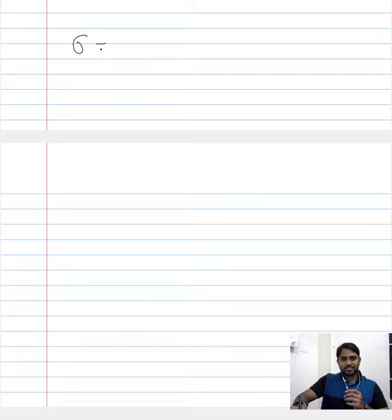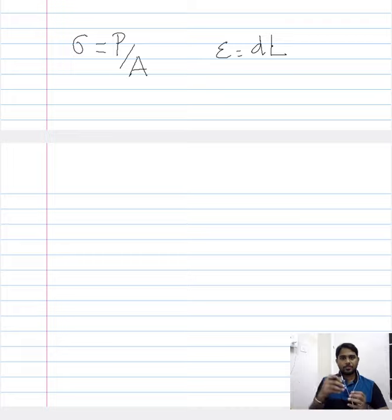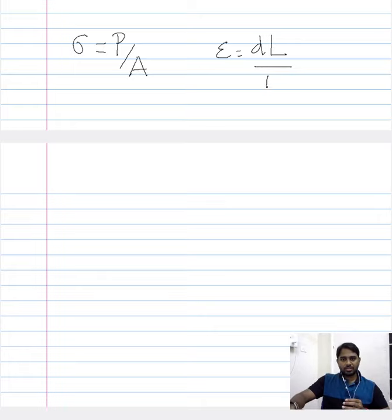Hello friends. Let us continue our discussion on quantifying the mechanical conditions that we impose on a material and also quantifying the response that the material renders when we impose such a condition. In order to get rid of any influence of the dimension of the material when we quantify the mechanical condition, we defined a parameter called stress, defined as the ratio of the load imposed on a material to the cross sectional area across which this load is imposed. Similarly, we quantified the response of a material as strain, which is the change in the longitudinal dimension that a material exhibits in response to the imposed stress in relation to its original length.